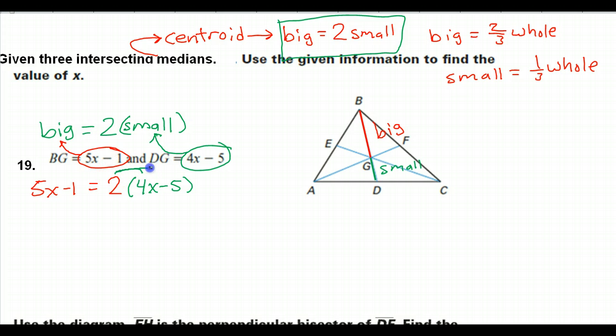From there, I think you guys won't have any problem with this. We're just going to solve this equation. So the distributive property here is going to give us 8x minus 10. And over here I still have 5x minus 1. I like to get my variables together immediately, so I'm going to subtract 5x from both sides. So that's going to leave me with negative 1 equals 3x minus 10.